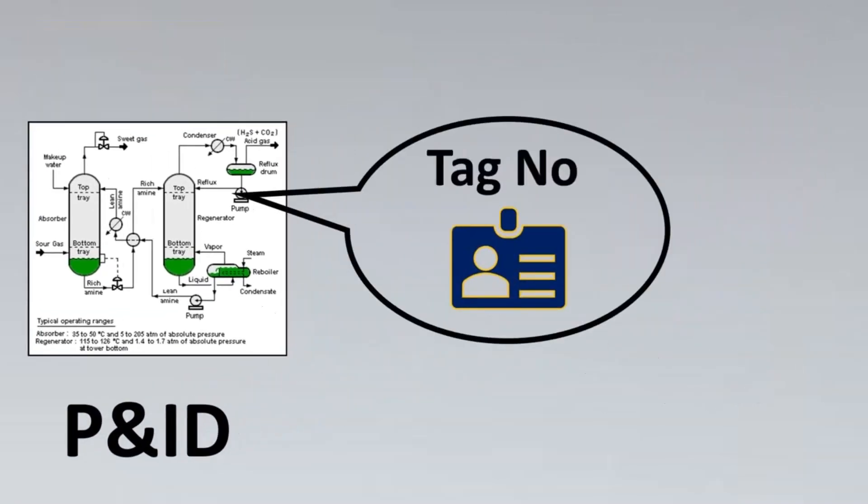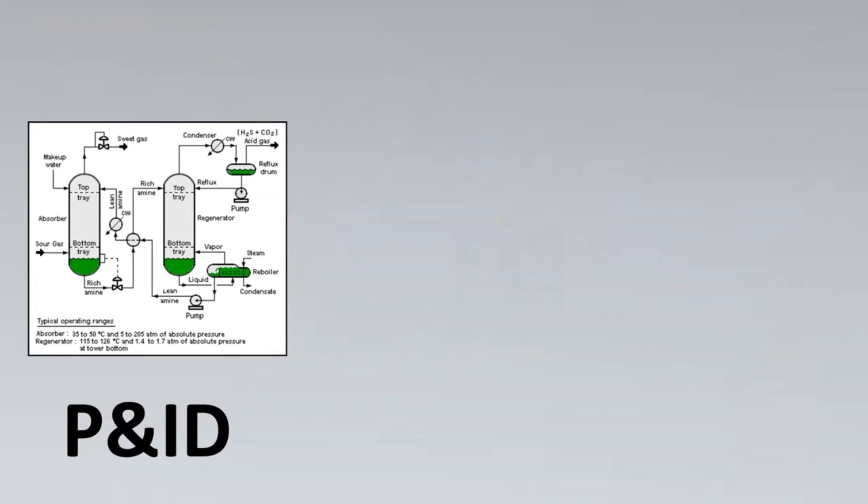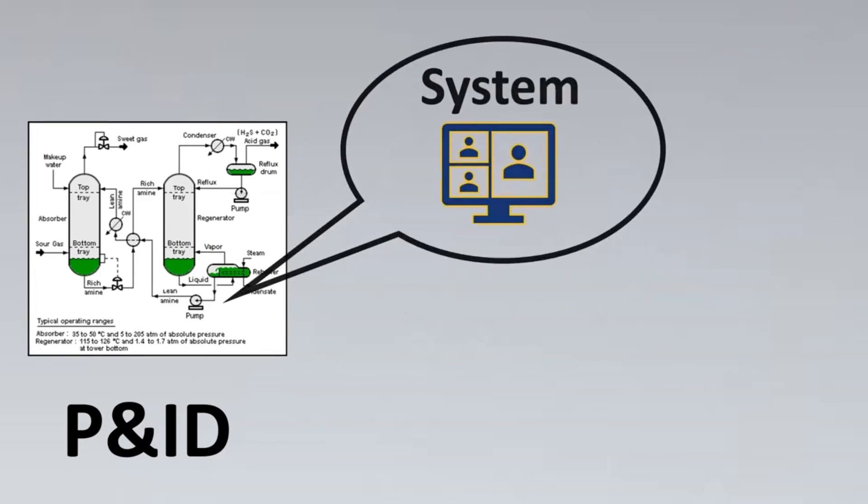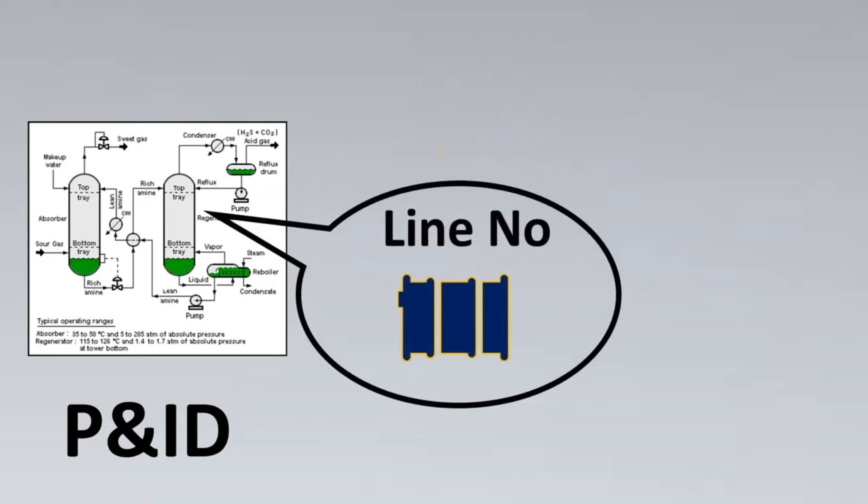The first step is to fill the tag number. We get to know from the P&ID what is the tag number, which system it's going to, which line number or equipment number, etc. All the basic details are known from the P&ID. So the first document to make a data sheet is the P&ID.